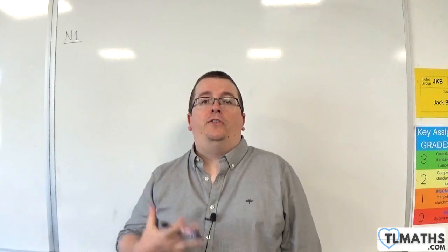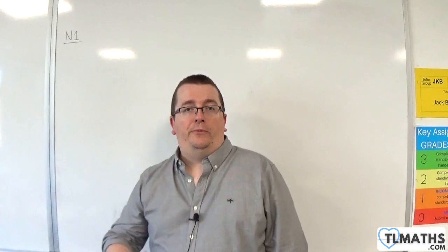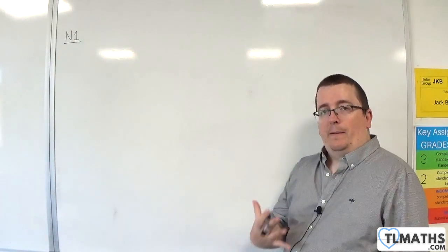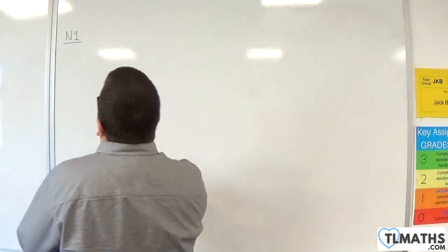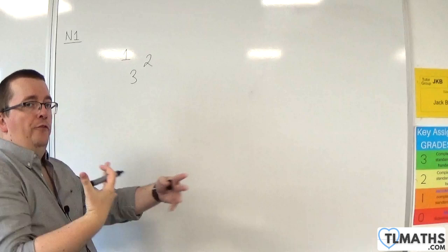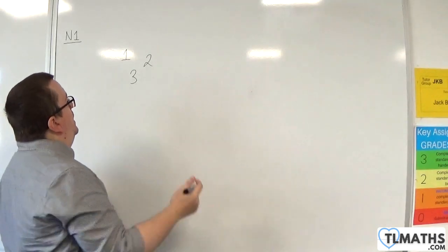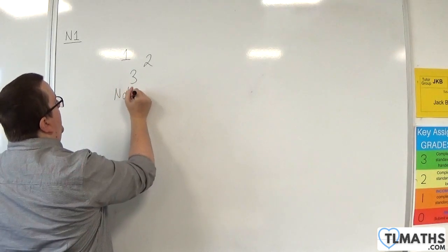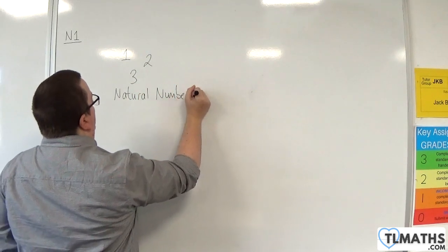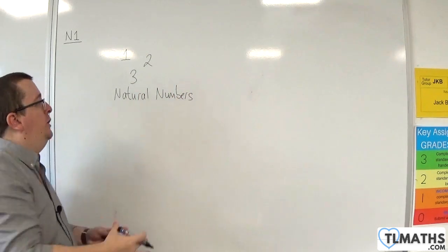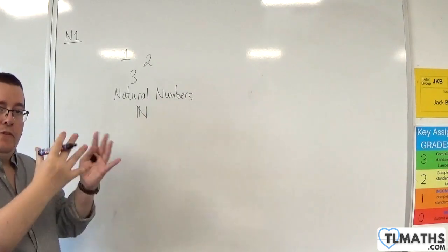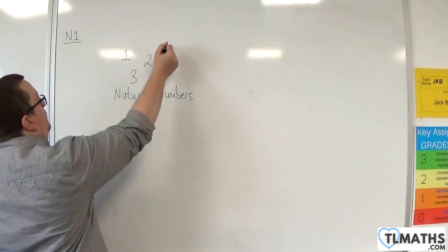In this video, I want to introduce you to different types of number. When you first start learning about numbers, you learn about 1, 2, 3, 4, 5, 6, 7, and so on. We refer to those as the natural numbers, and mathematicians use the symbol of a double N to represent the set of natural numbers.